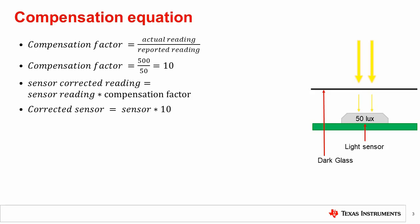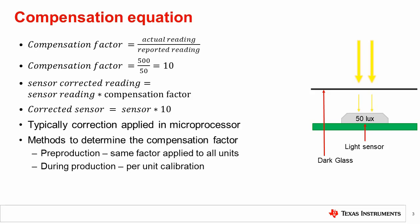Typically, this is done as multiplication in the microprocessor after the lux is measured from the sensor as part of the conversion from sensor codes to the lux value. There are two methods for determining the compensation factor that will be covered in this series. The factor can be determined pre-production and the same factor applied to all units in production, or a unique factor can be calculated in production and applied to each unit individually for improved accuracy. The latter method is discussed in the next video.